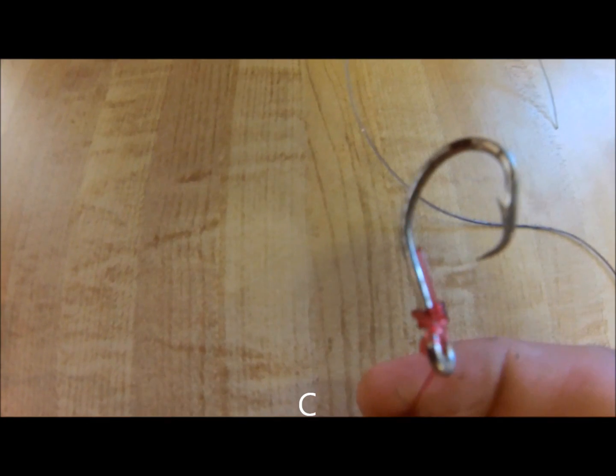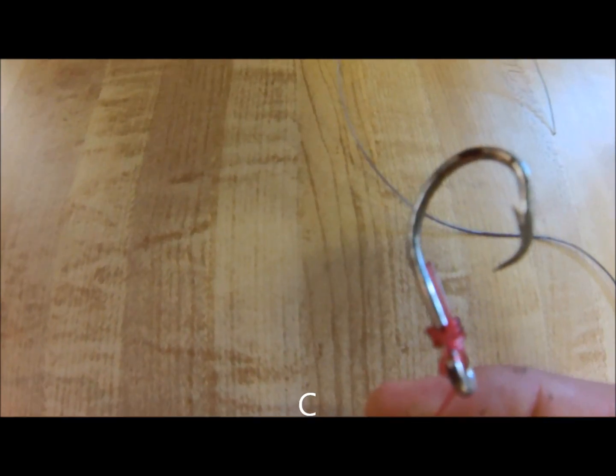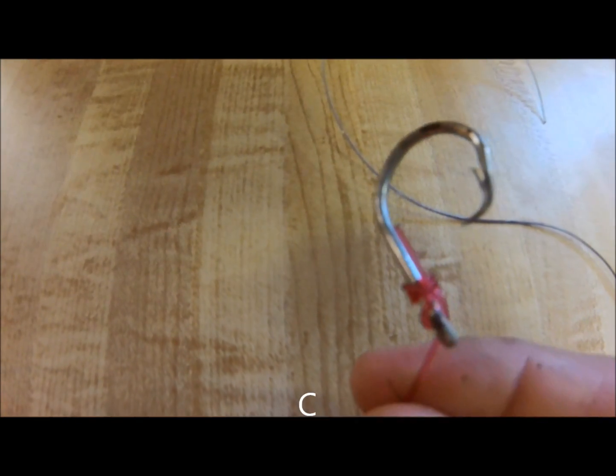The third hook is hook C, which is also snelled improperly. As you can see, the line comes through the back of the eye. This is incorrect.